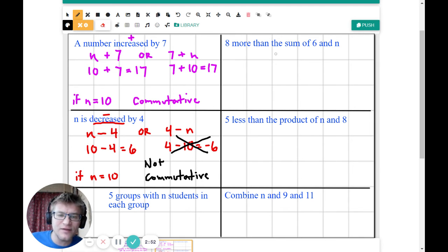Let's go down and do five groups with n students in each group. Groups sometimes means division, but if you have five groups with n students in each group, doesn't that mean multiplication? So wouldn't that be 5 times n? Or you could say n times 5.